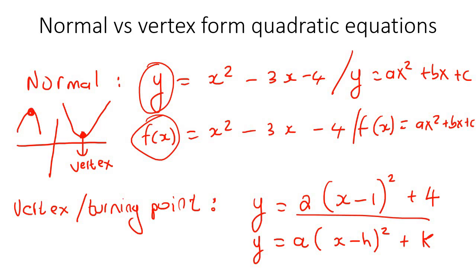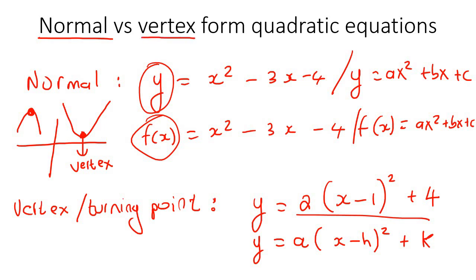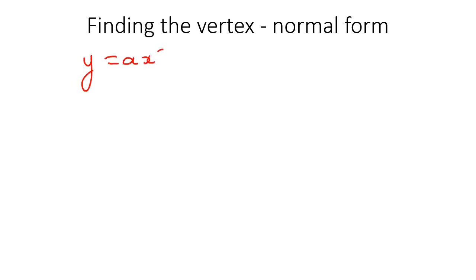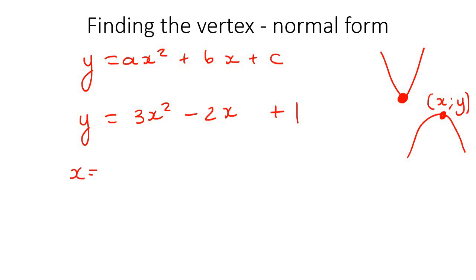What I'm going to do in this lesson is show you how to find the vertex using the normal formula, and also how to find it if it's in vertex form. If we're using the normal form — y equals ax squared plus bx plus c — for example y equals 3x squared minus 2x plus 1, then to find the vertex, which is the point where it turns, you need to find its x value and y value. To find the x value, use the formula: minus b over 2a.